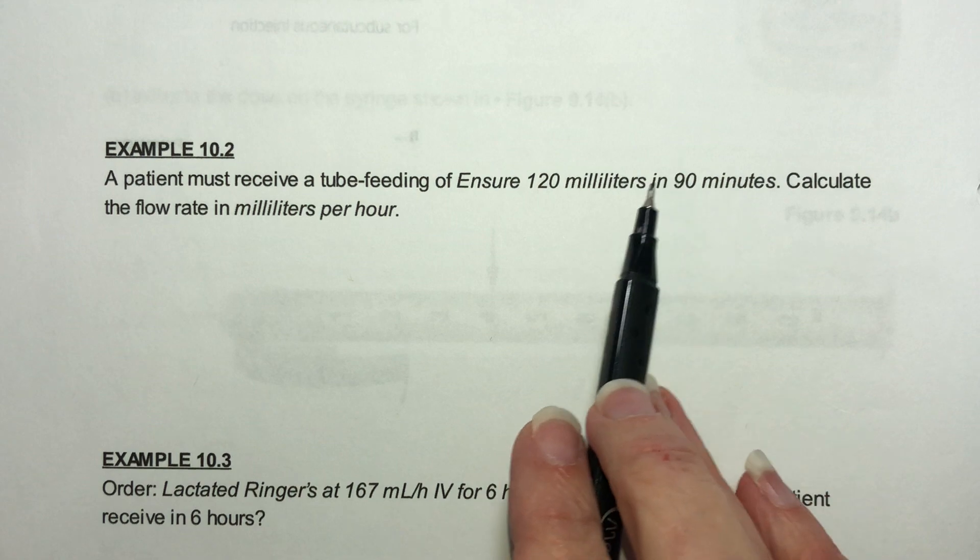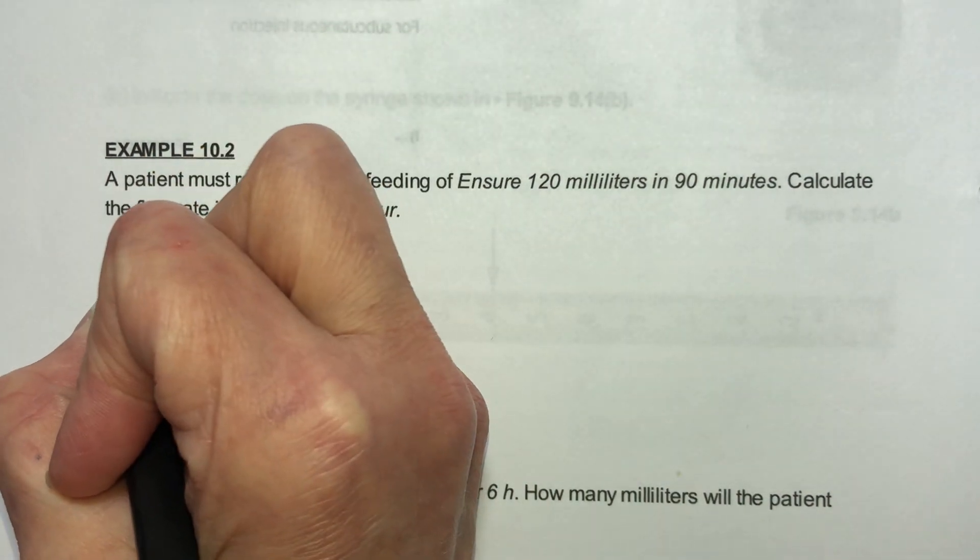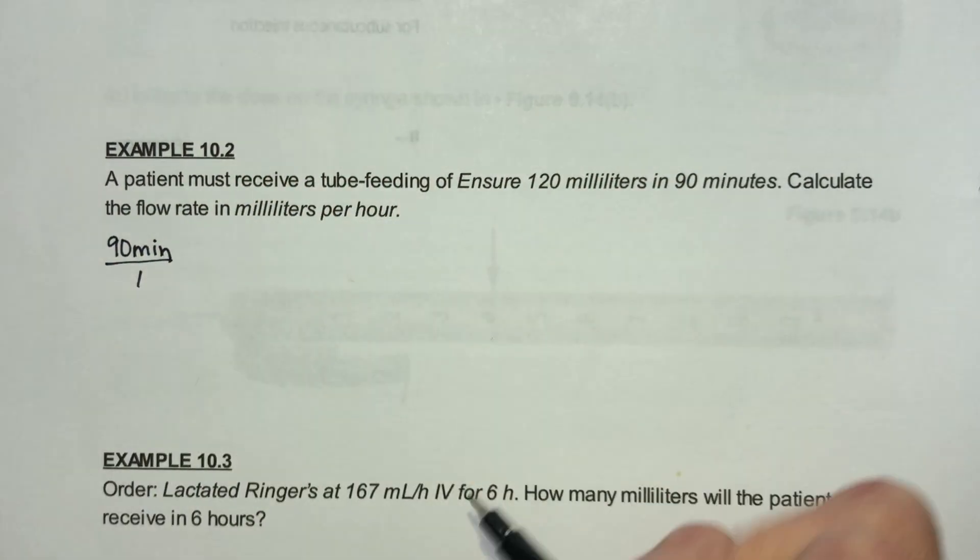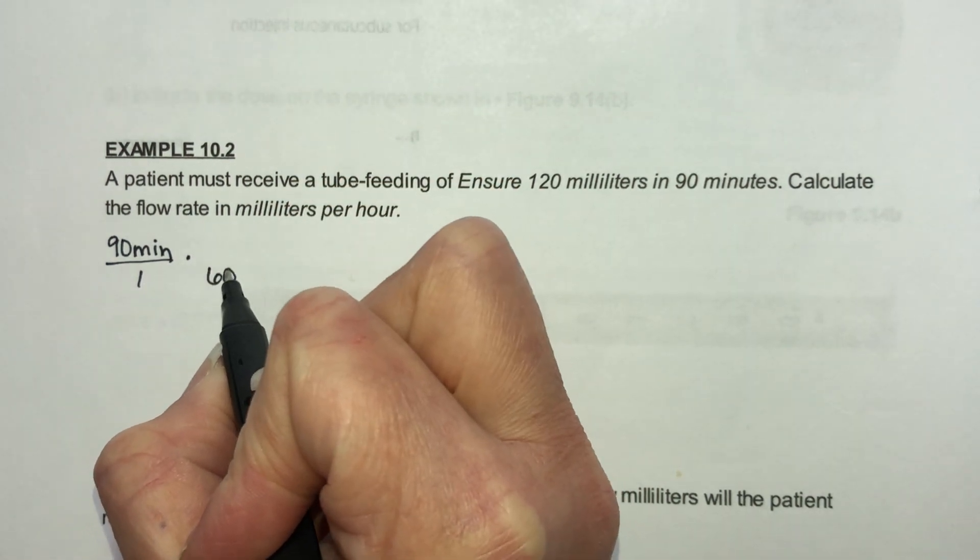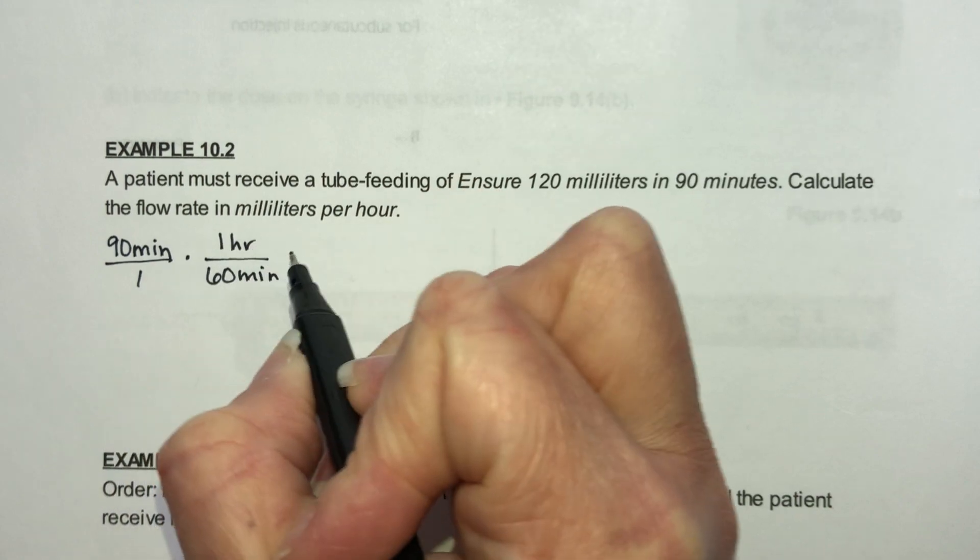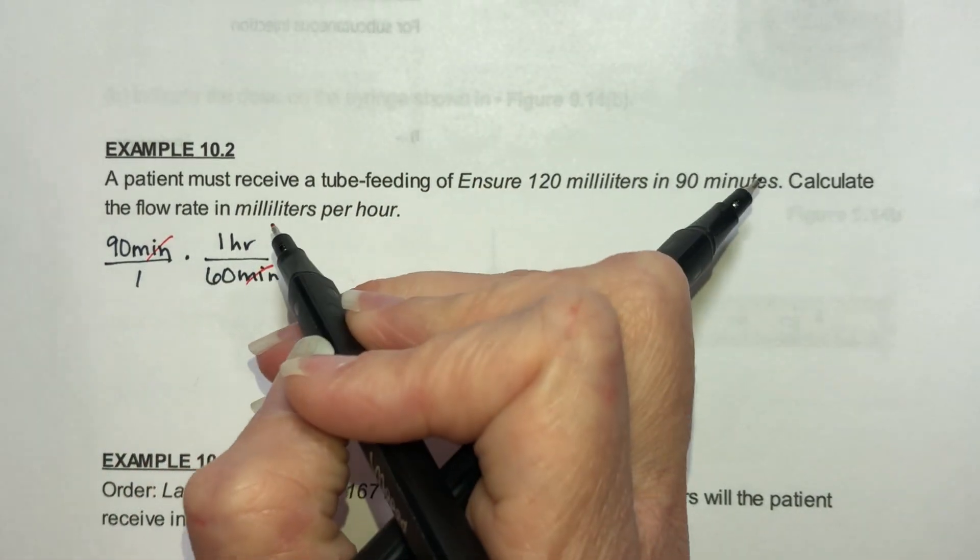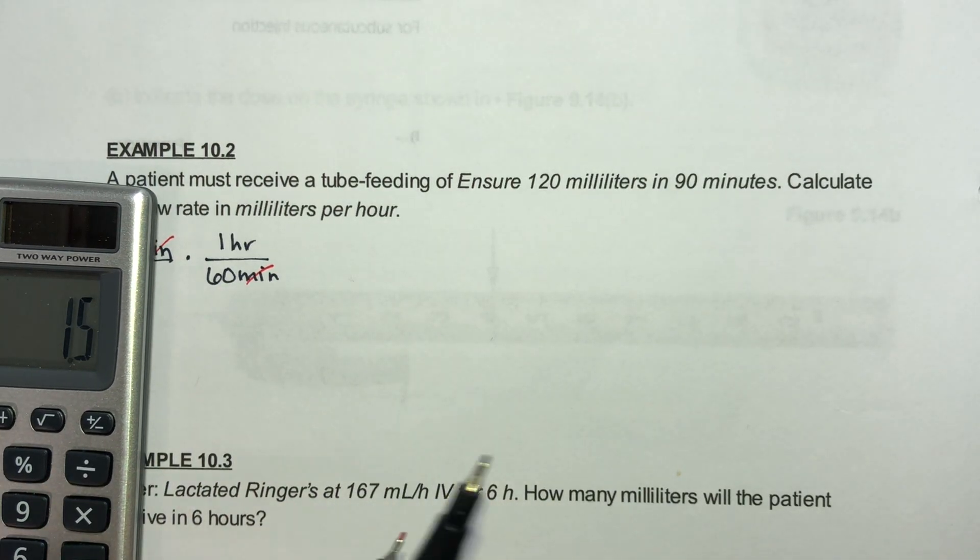I know most of you can look at 90 minutes and know it's an hour and a half but how do we do it if we don't know that? 90 minutes let's convert that. We have 60 minutes in one hour. The minutes cancel so we're going to have hours. If you do 90 divided by 60 you get 1.5.